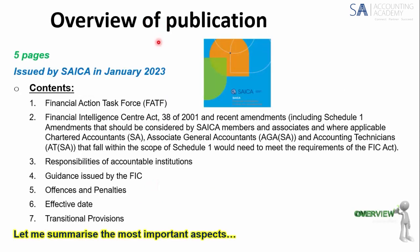As part of an overview, the document is five pages long and was issued by SAICA in January 2023. The contents we're going to look at briefly: FATF, then FICA itself, Schedule 1 amendments, and why we would worry about where CAs, AGAs, and ATs fall within the scope of Schedule 1 and would be regarded as an accountable institution required to meet FICA requirements. Also the responsibilities of accountable institutions, guidance issued by FIC, offences and penalties, the effective date, and the transitional provisions.